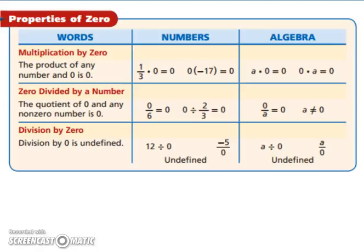Let's look at properties of zero. Multiplication by zero. The product of any number and zero is zero. So you can have 1 third times zero, and it's zero. You can have negative 17 times zero, and it's zero. It does not matter what you pick. If you multiply it by zero, your result is zero. Zero divided by a number. So the quotient of zero and any non-zero number is zero. So that's when zero is on the top. So when you're doing zero divided by 6, zero divided by 2 thirds, that's when your result is zero. If you're dividing by zero, then it's undefined. Remember, you can't have zero in the denominator of a fraction.